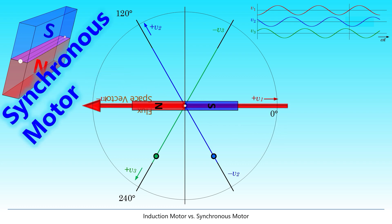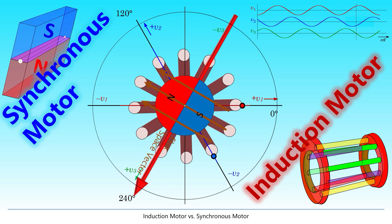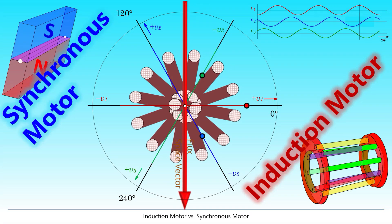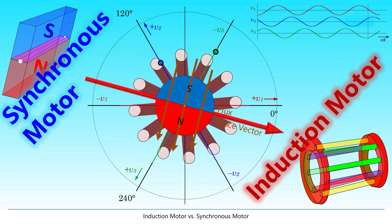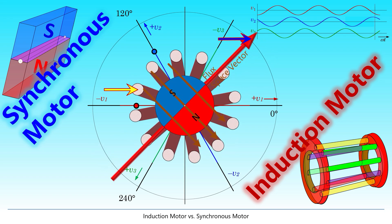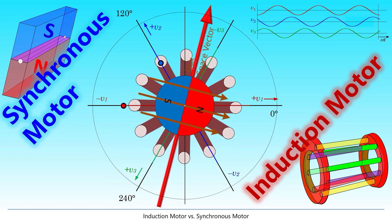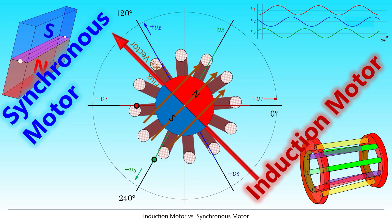While synchronous machines use a permanent or at least a constant magnet in the rotor, induction machines rely on a temporarily induced magnet. This magnet is only there when the rotor changes its position in relation to the rotating magnetic field. This movement is responsible for changing magnetic field within the rotor.